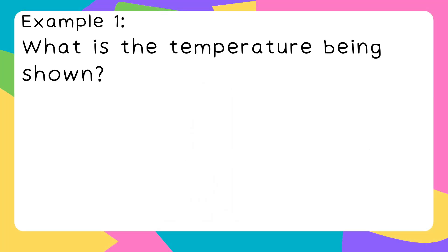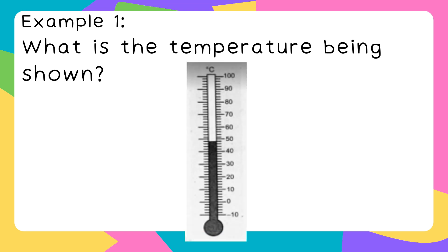Example natin, what is the temperature being shown? Itong larawan natin, mula dun sa 0, so 10, 20, 30, 40. Umabot ba sa 50 yung stock? No. Pero umabot siya dun sa isang givet bago mag-50. Meaning, kung yan gibilangin natin, 1, 2, 3, 4, 5. Pwede natin niya i-estimate na 2, 4, 6, 8. Masasabi natin na ang measurement ng temperature na ito ay 48 degrees Celsius.